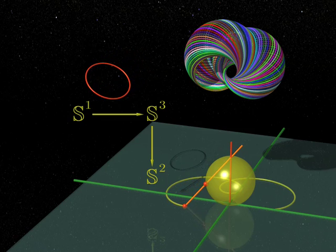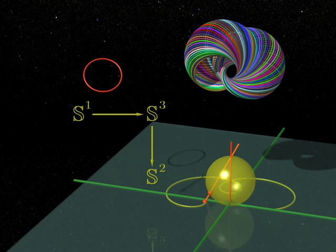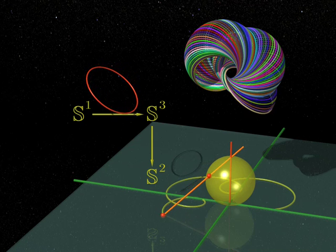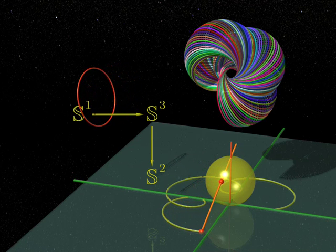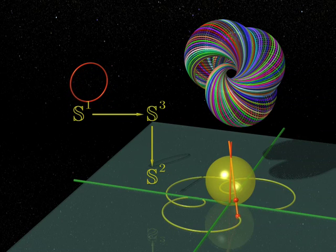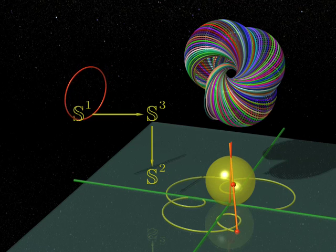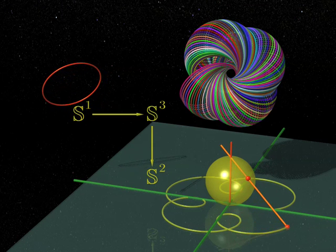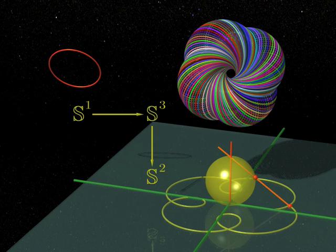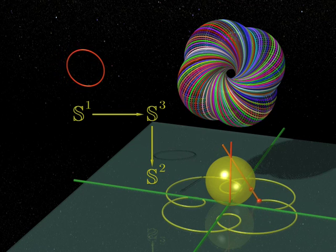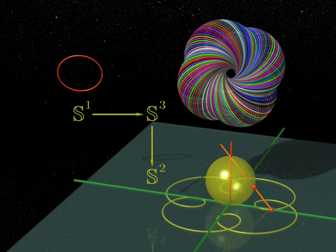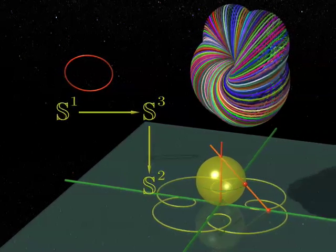In this way, we get a projection from the three-sphere to the two-sphere. Complicated, isn't it? Mathematicians say that above any point of the base S2, there is a fiber which is a circle S1, and that the total space of this fibration is the sphere S3. I am very proud of my fibration, all the more so because it has become a fundamental object in topology.